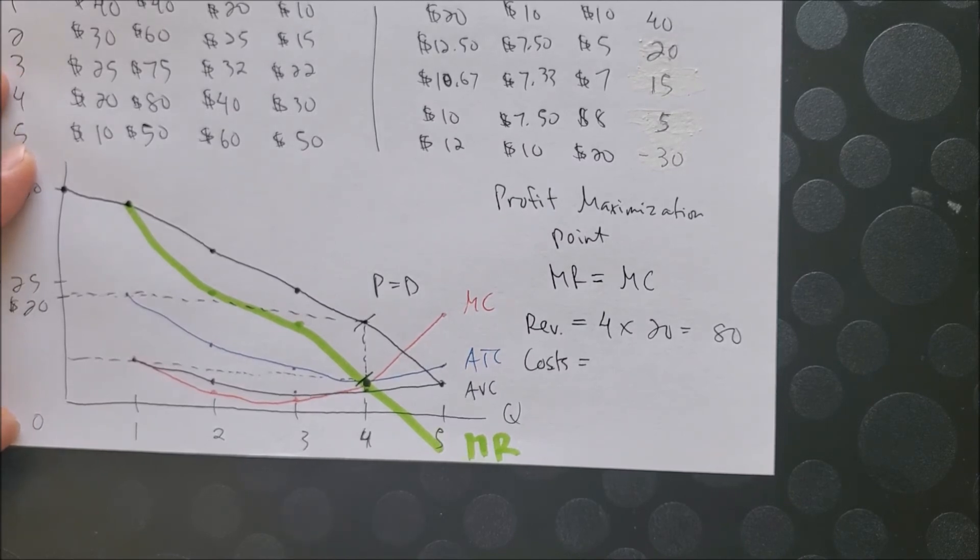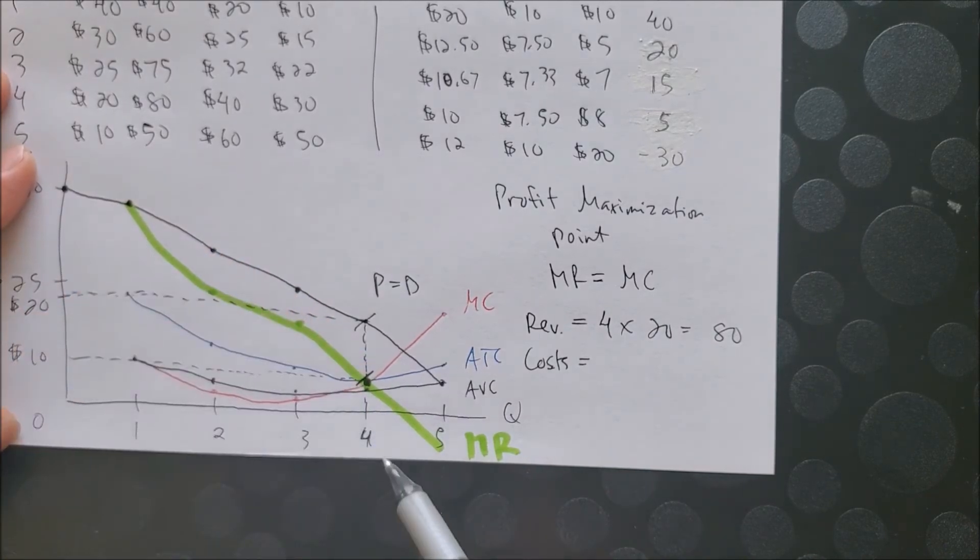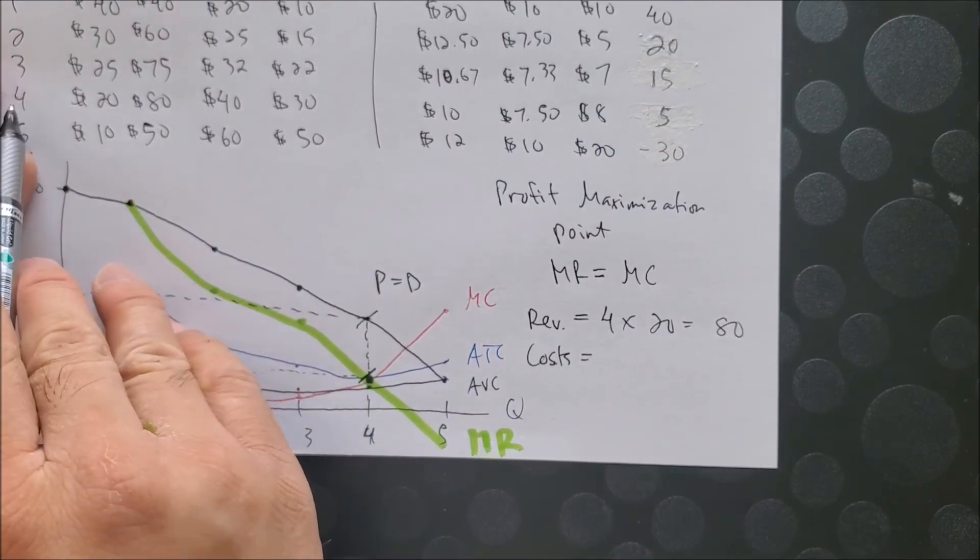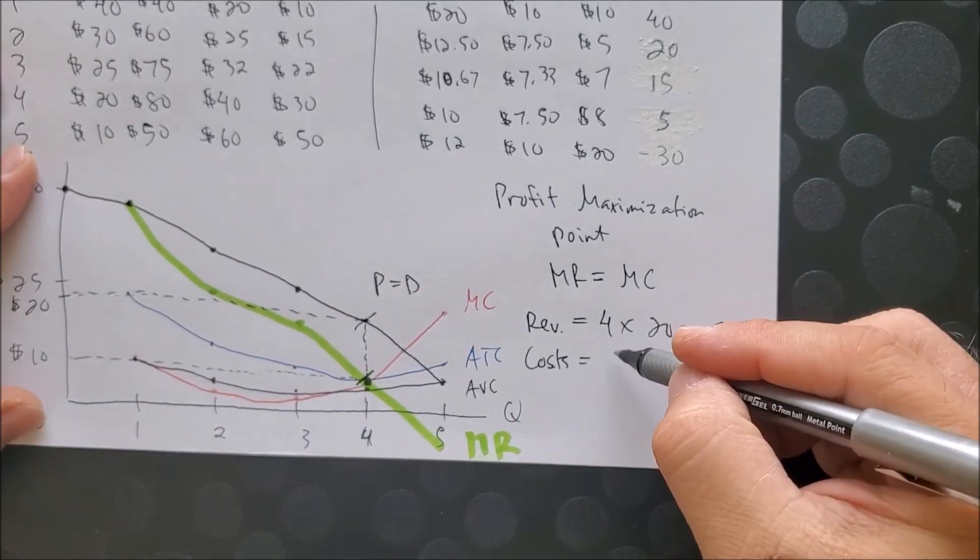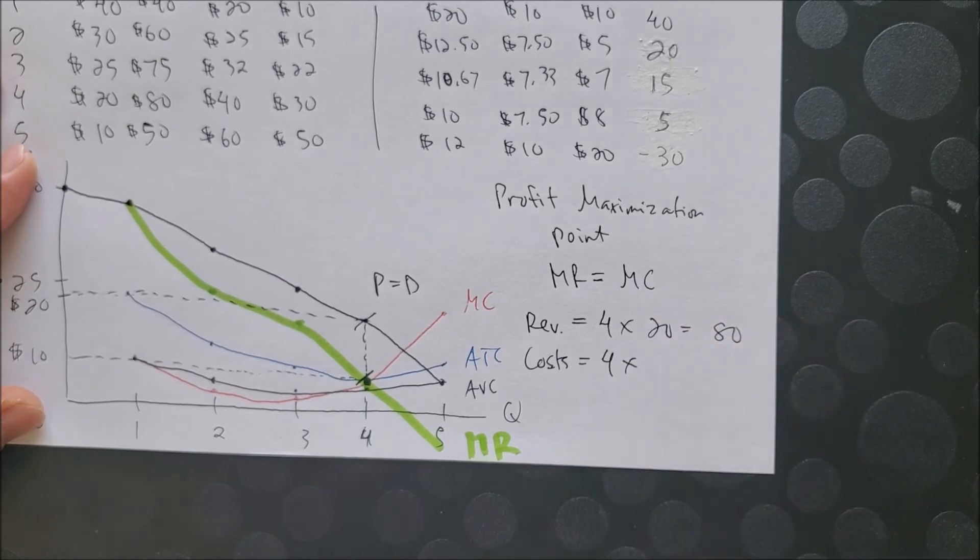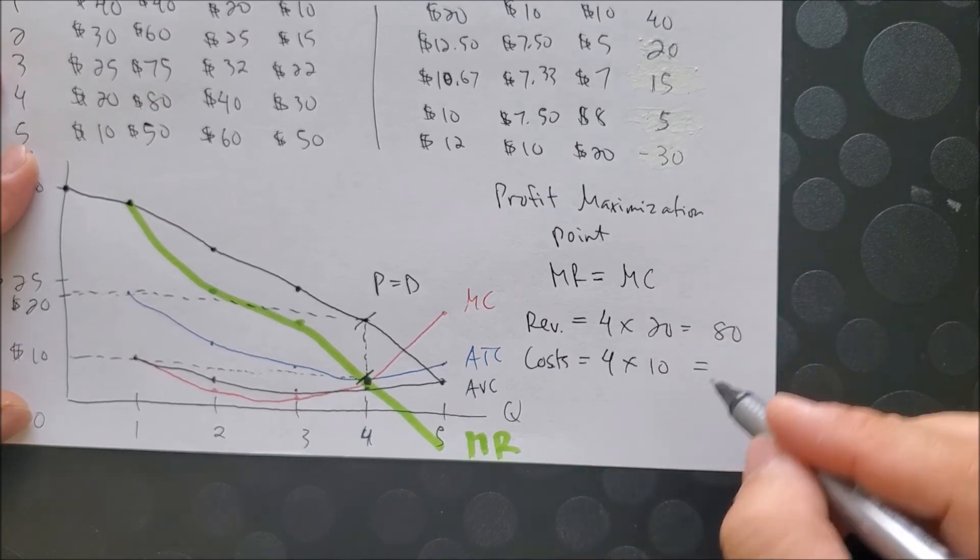So if we look at our graph, we can say this could be $10. Because at 4 units, 4 ATCs at 10, this might be 10. We now have the area of a rectangle length of 4 times a width of 10. Now we have 40.